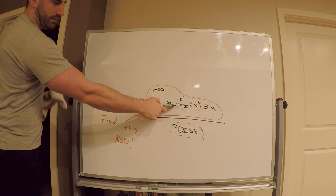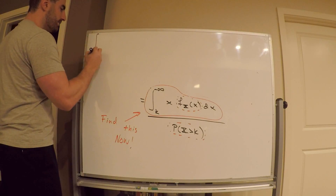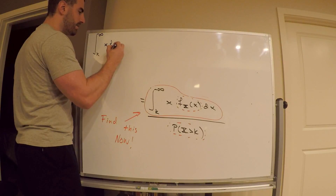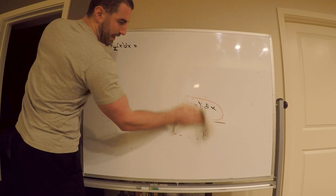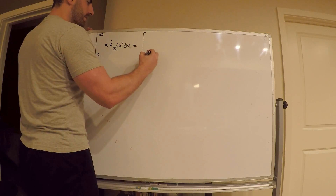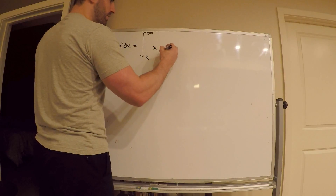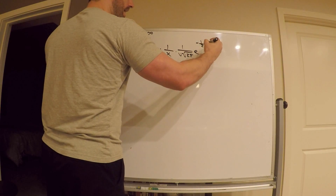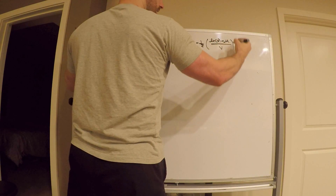What is this equal to? Remember, we found the PDF. Capital X is the stock price at time t. It's log normally distributed. We found its probability density function. So we're going from k to infinity of x times the density function of x, which is 1 over x times 1 over v times square root 2 pi times e to the negative 1 half times ln x minus mu over v, squared, dx.